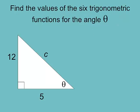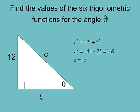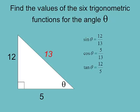Here's a common problem: find the values of the six trigonometric functions for angle theta given a right triangle with legs 12 and 5. Theta makes 12 the opposite side and 5 the adjacent side. Using the Pythagorean theorem, C² = A² + B², we get 144 + 25 = 169, so C = 13. Now with all three sides: sine of theta = 12/13, cosine = 5/13, tangent = 12/5.